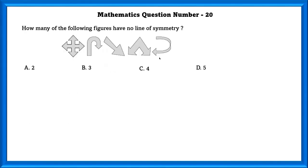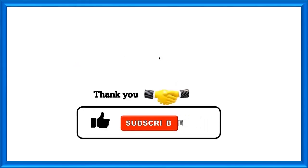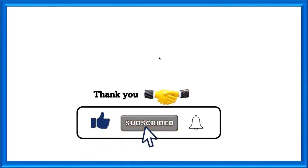Mathematics question number 20. How many of the following figures have no line of symmetry? Three of the following figures have no line of symmetry. That's it for this video. Make sure to subscribe, like the video, and turn on post notifications so that you don't miss out on any videos. See you next time!